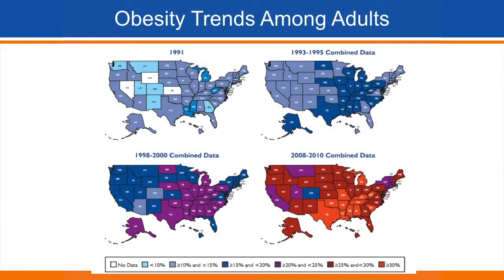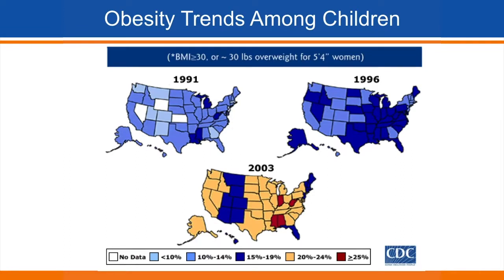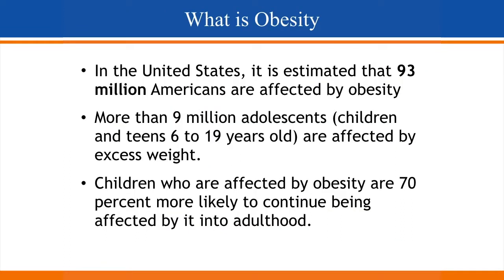Here we can see the obesity trends in the US. It is slowly getting worse and worse — according to 2014 data, most states have more than 35% obesity rate, and a similar trend is seen in kids. In the US, we now have 93 million adults affected with obesity, and around 9 million adolescents or kids are also affected. Notably, 70% of kids with childhood obesity will continue to have obesity in adult life.